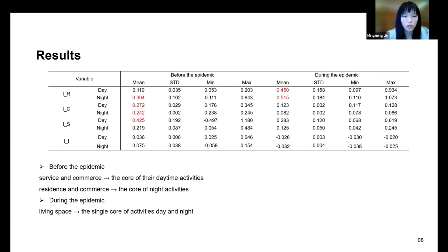Table 2 shows the impact of urban functions on population aggregation changes before and during the epidemic. Before the epidemic, the effect of functions on population aggregation was positive. In terms of daytime, the average impact intensity of service function is the largest, followed by commercial function. At night, the average impact of residential and commercial function is relatively strong.